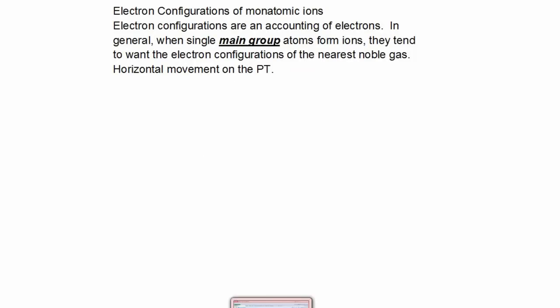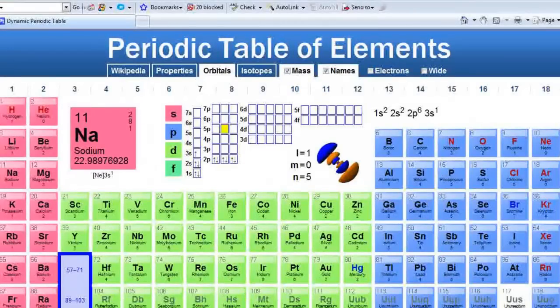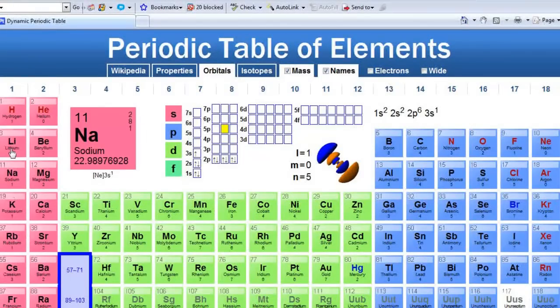Let's look at the periodic table and remind ourselves where the main group atoms are. It's group number one, which are the alkali metals, and group number two, the alkali earths. And the other main groups are here, the last six groups: one, two, three, four, five, six.